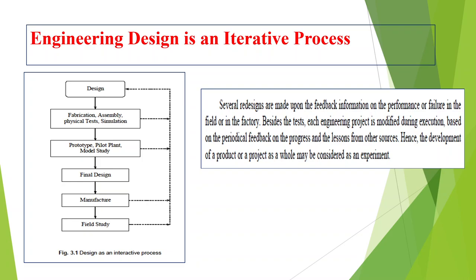At each and every stage we have to get the feedback, and if needed, we have to make corrections. The dotted arrow marks in the diagram show that feedback. At every stage we get feedback and correct accordingly. Hence the development of a product or project is considered to be an experiment.